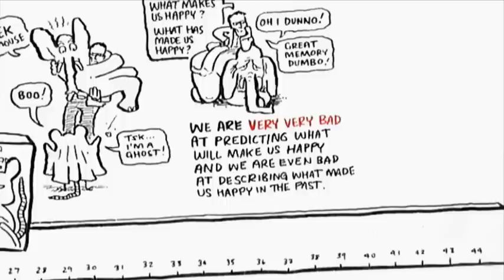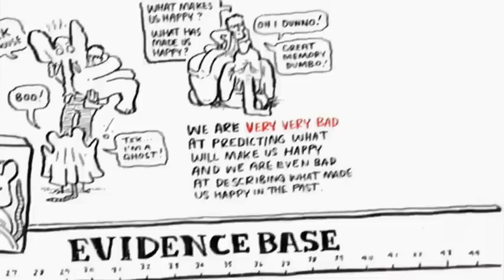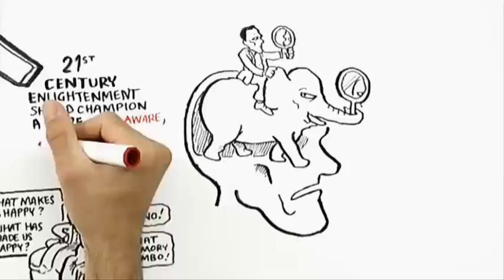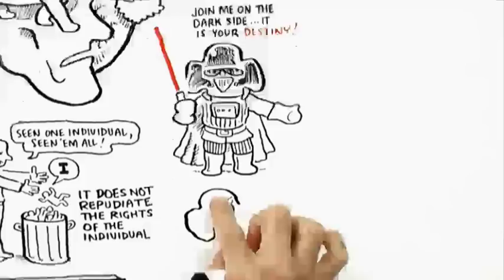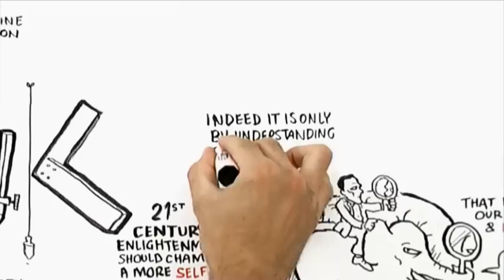So I would argue that the moral and political critique of individualism now has an evidence base. And it's with this in mind that I argue that 21st century enlightenment should champion a more self-aware, socially embedded model of autonomy that recognizes our frailties and limitations. Now, this does not mean repudiating the rights of the individual, and nor does it underestimate our unique ability to shape our own destinies.